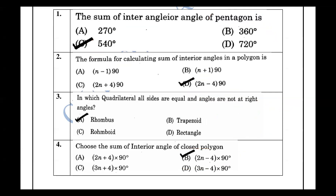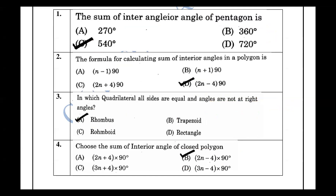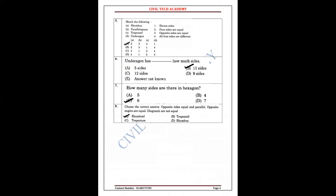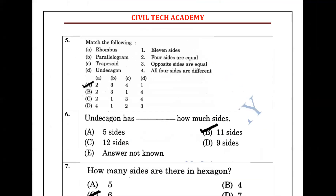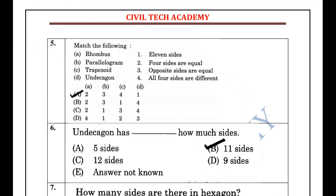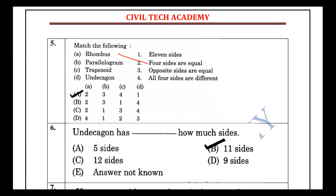A quadrilateral where all sides are equal but the angles are not right angles is a rhombus. The parallelogram has 4 sides with opposite sides equal. The trapezoid has one pair of parallel sides and the other pair is different.